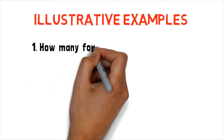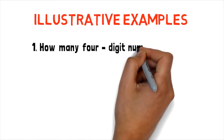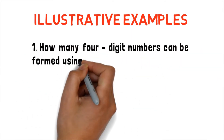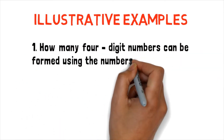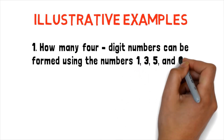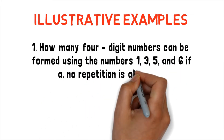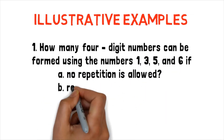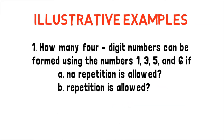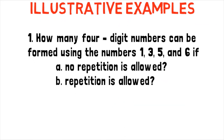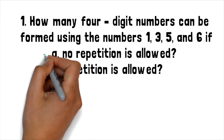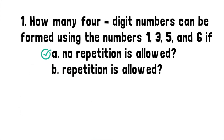Problem number 1: How many 4-digit numbers can be formed using the numbers 1, 3, 5, and 6 if A) no repetition is allowed, and B) repetition is allowed? Let's start with part A, when no repetition is allowed.